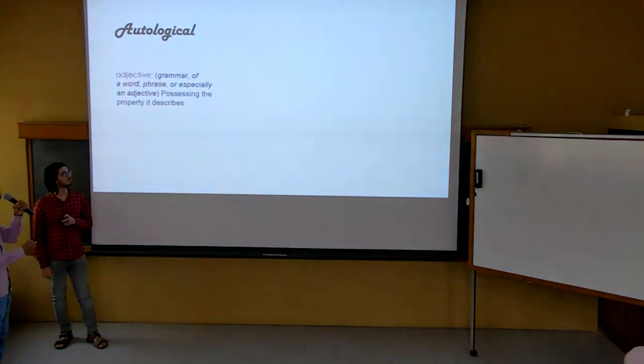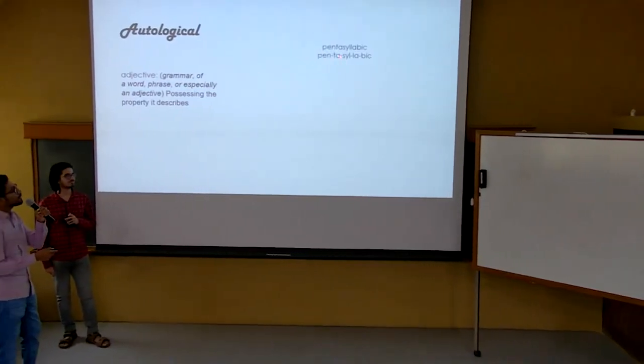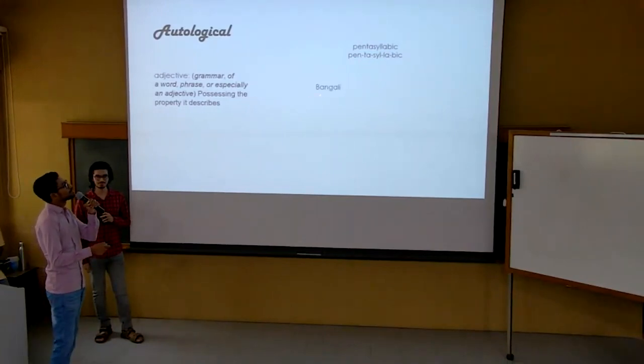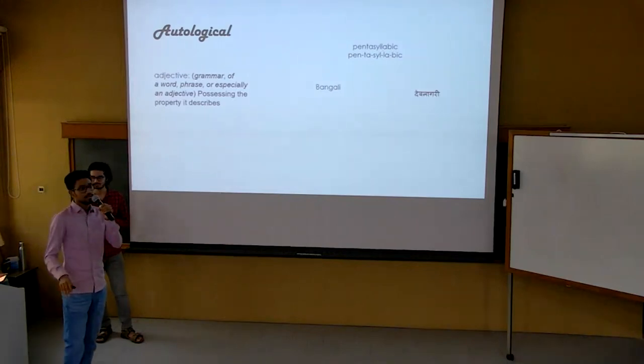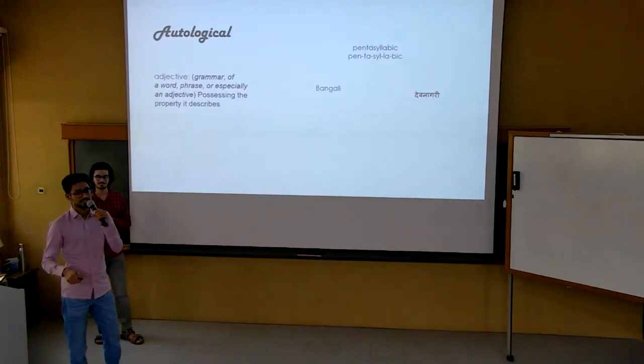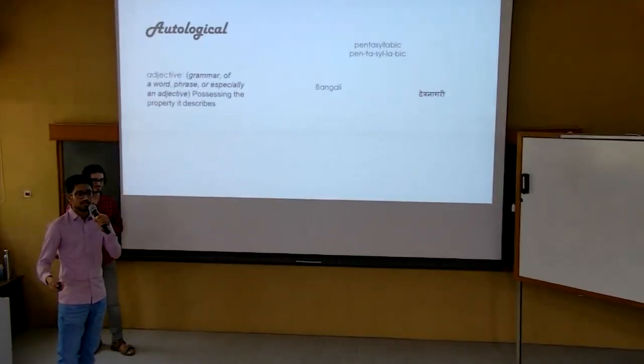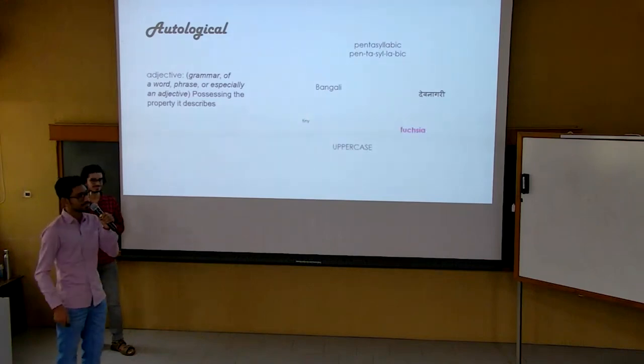An adjective is said to be autological if it describes itself. For example, pentasyllabic has five syllables. Bengali, which means Bengali word, is written in Bengali. Other fun examples include the word Devanagari written in Devanagari script, or tiny written in very tiny font, or uppercase written in uppercase, or fuchsia written in fuchsia.